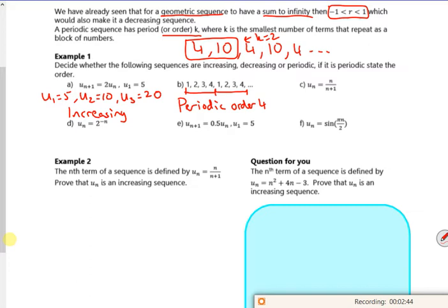Let's have a look at this one. If I put n is 1 in, I get 1 over 1 plus 1, so I get a half. If I put n is 2 in, I get 2 over 2 plus 1, so I get 2 thirds. If I put n is 3 in, I get 3 over 4.